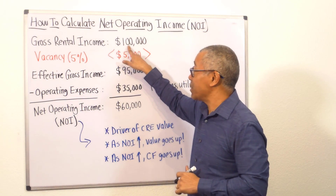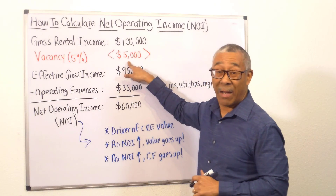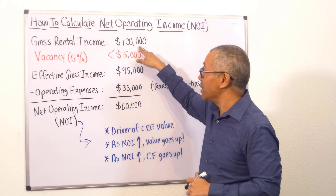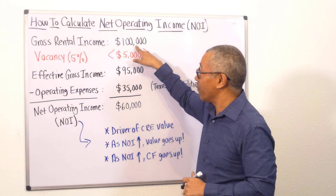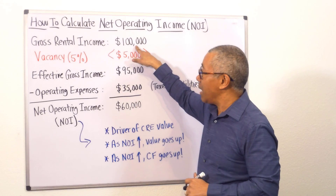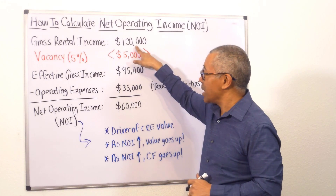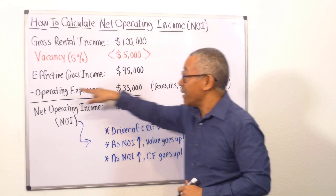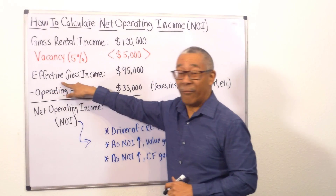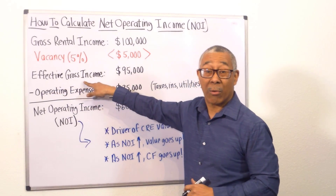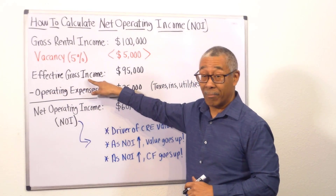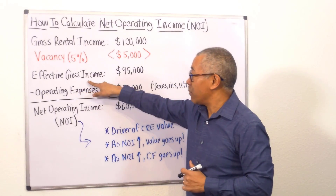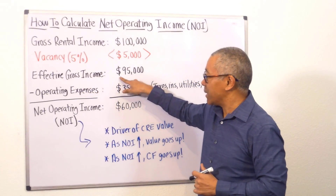So 5% of $100,000 is $5,000. We're going to subtract $5,000 from $100,000, which gives us $95,000 per year. This is called your effective gross income. Income minus vacancy equals effective gross income.